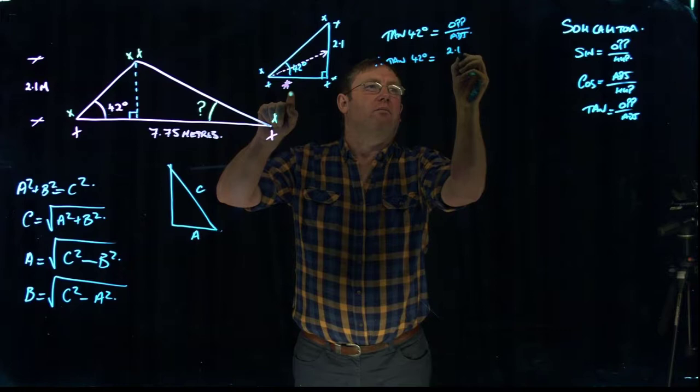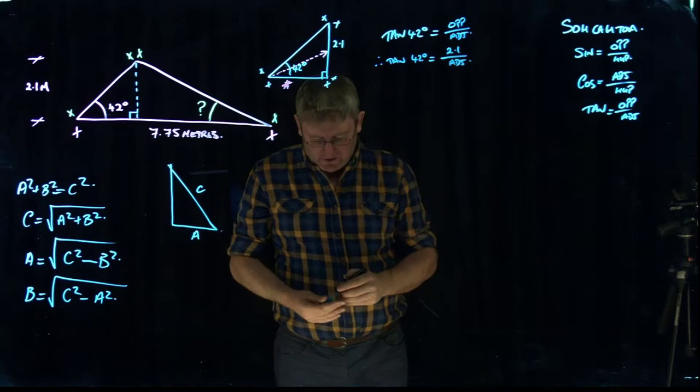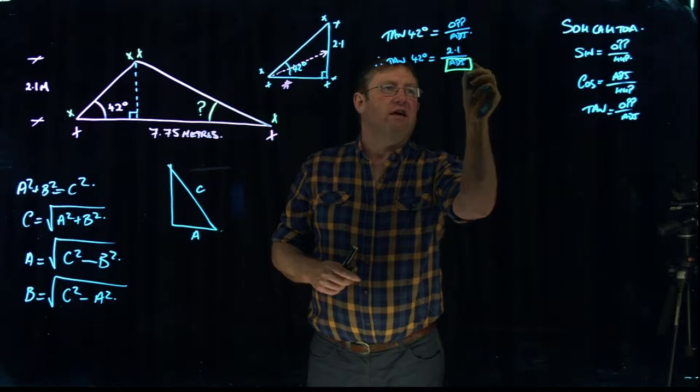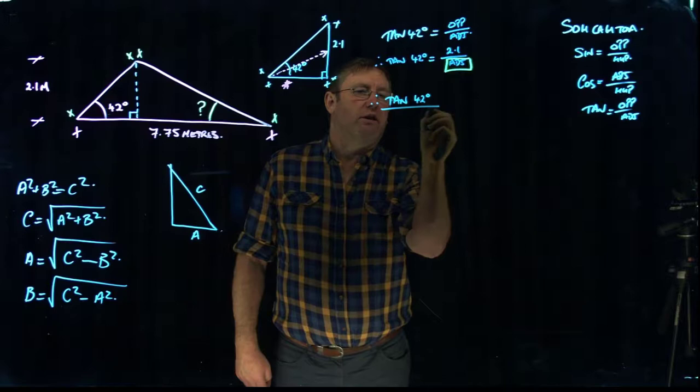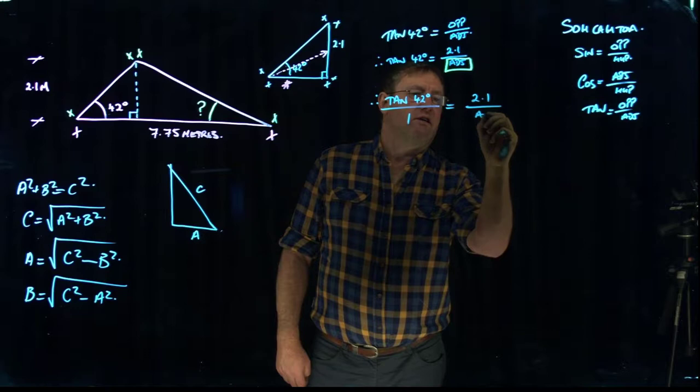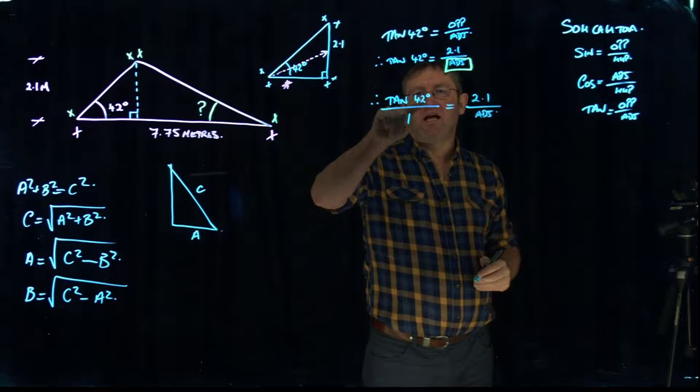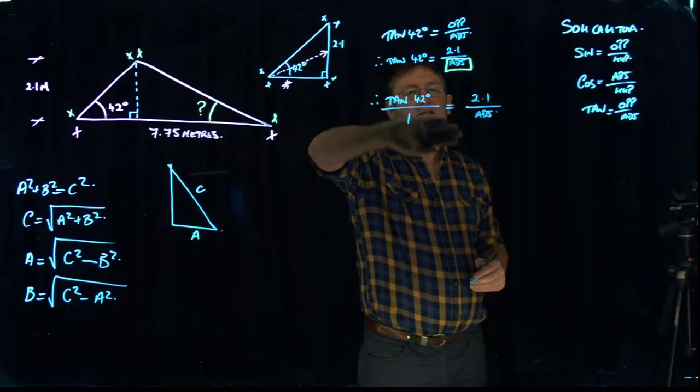Therefore tan 42 degrees equals 2.1 meters over the adjacent side. So what we want to do is isolate the adjacent component, this here, on one side of the equal sign and get everything else over to the other side. So if I rewrite it again, I'm going to write tan 42 degrees and I'm going to put that over 1. And then I'm going to write 2.1 over adjacent.